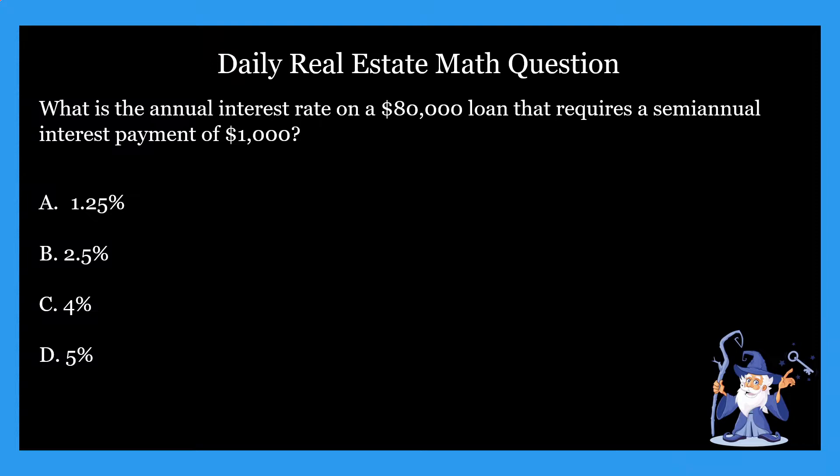Let's just jump right into it. We are covering interest rate problems this week — pretty basic ones, but we've jumped up the difficulty a little bit by adding another step into the problem. Hopefully you guys have been paying attention, otherwise you might get stumped. The question says: what is the annual interest rate on an $80,000 loan that requires a semi-annual interest payment of $1,000? It gives us four options like usual.